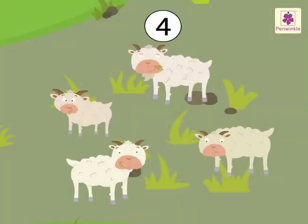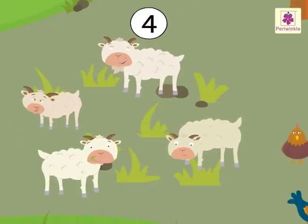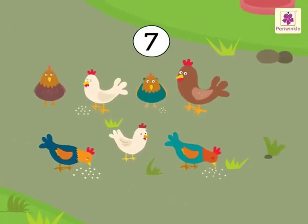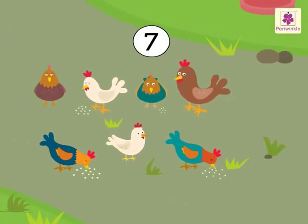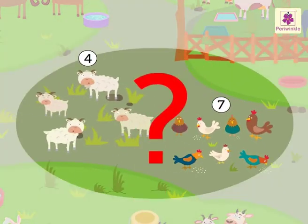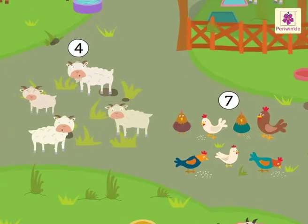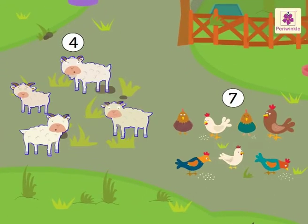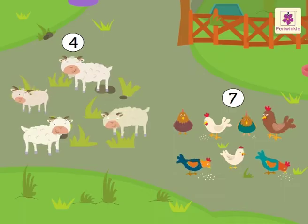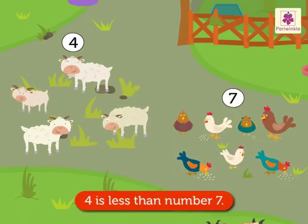There are four sheep. There are seven hens next to the sheep. Are the number of sheep lesser or the number of hens lesser? The number of sheep are lesser. Hence, number 4 is less than number 7.